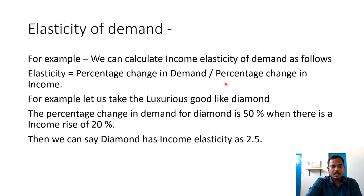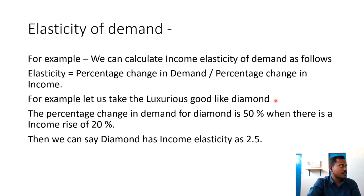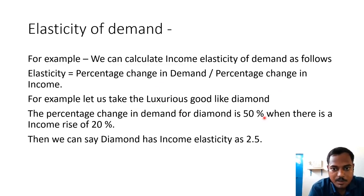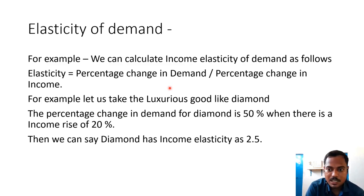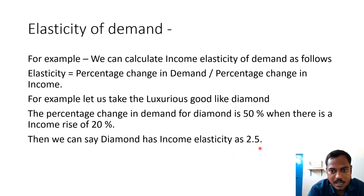We can calculate how much the demand changes when there is an income change. For example, let us take a luxury good like diamond. The percentage change in demand for diamond is 50%, when there is an income rise of 20%. So the numerator is the percentage change in demand (50%) and the denominator is the percentage change in income (20%). When income rises by 20%, the demand for diamonds rises by 50%, giving us an income elasticity of 2.5.